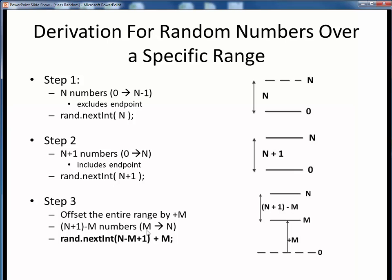So in the next int method, we've simply replaced the term N plus one with N plus one minus M, or rearranged N minus M plus one. Then we offset the entire result by M, and that leaves us with the general expression we saw on the prior slide.